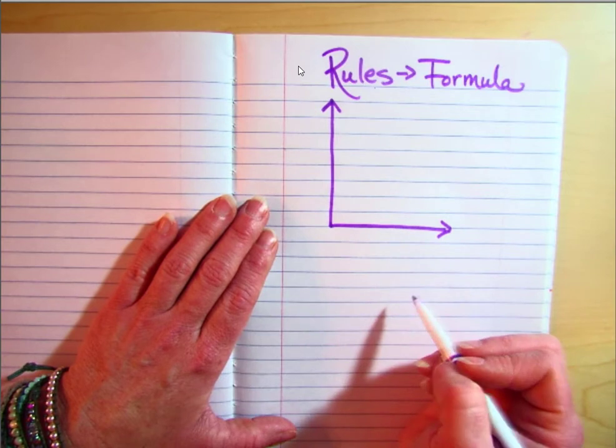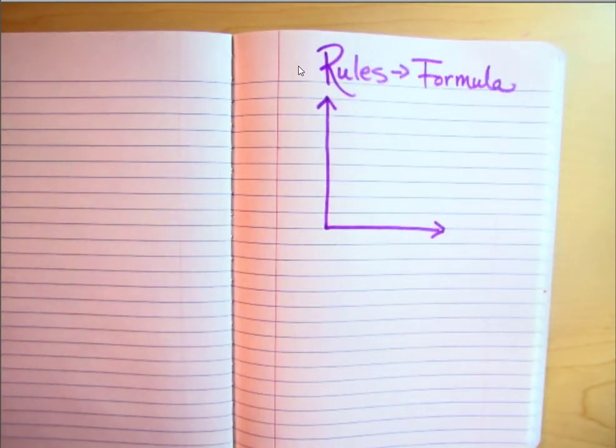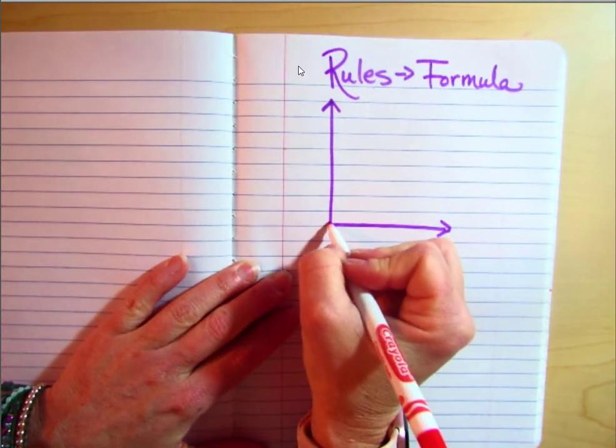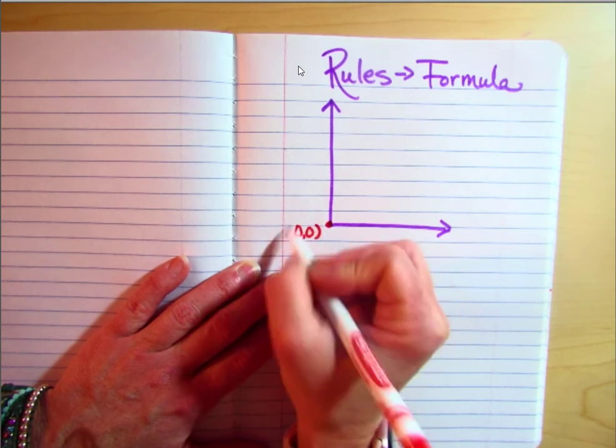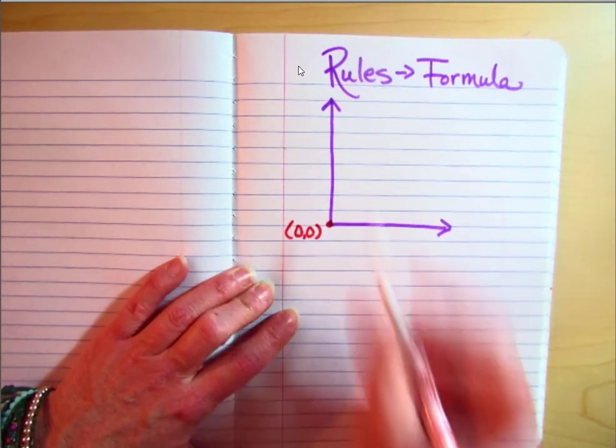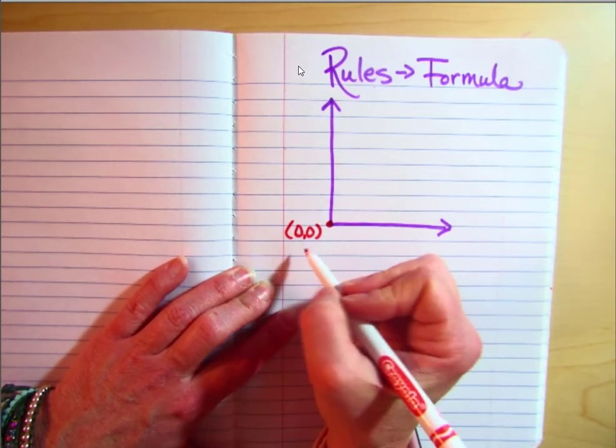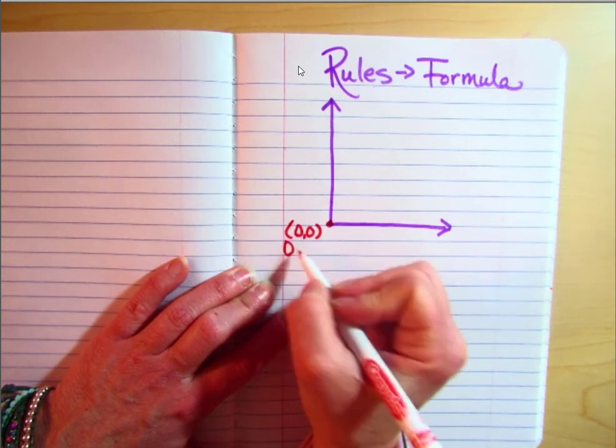I'm not going to draw all the grid lines, but there are some things you need to remember. We're going to talk about them throughout the chapter. This point right here is zero, zero. This is the starting point for all of these coordinate grids, and this is called the origin.